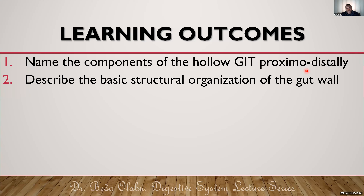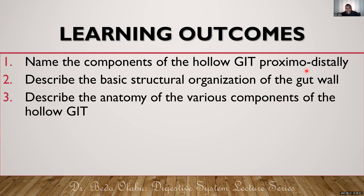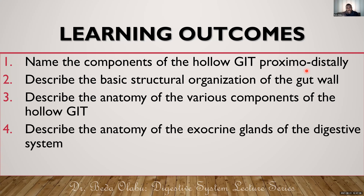We'll also name the various sphincters along the GIT. Then we'll talk about the structural organization of the GIT wall — how it is organized structurally. When I use the term GIT, I'm referring to the gastrointestinal tract. We will then talk about the anatomy of the various components of the alimentary canal, and next week we'll talk about the anatomy of the exocrine glands of the digestive system and the splanchnic circulation.